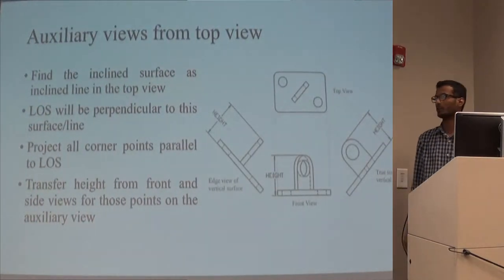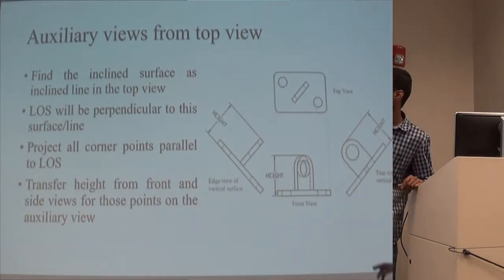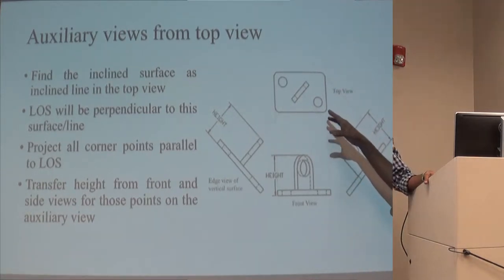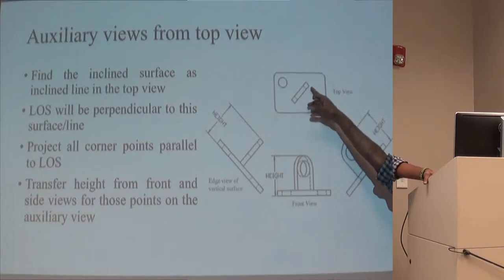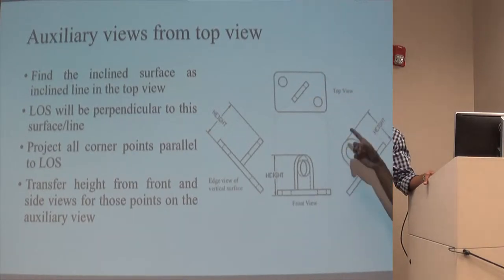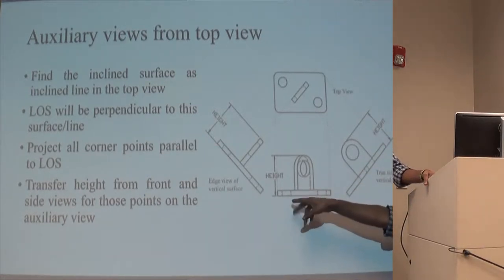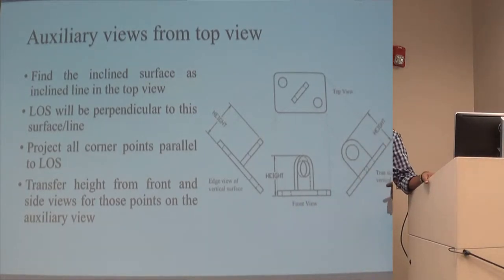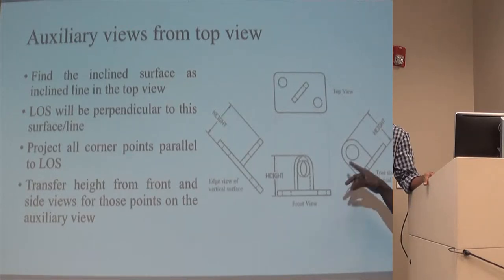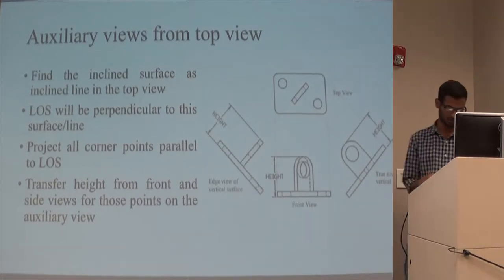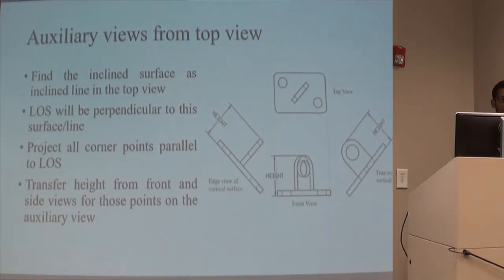The third case is auxiliary view from the top view. I have my front view and my top view. If asked to sketch an auxiliary view from the top view, I would need to select an inclined edge, then draw a parallel line to that inclined edge, project everything, and transfer the height information either from the front or the side view, whichever is given, and complete my auxiliary view. There are many different possibilities depending on how the question is asked, and I will explain each step in detail using an example.